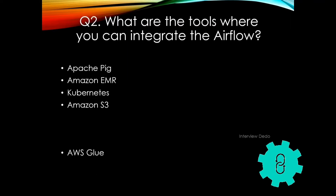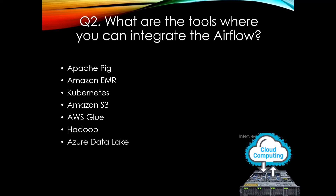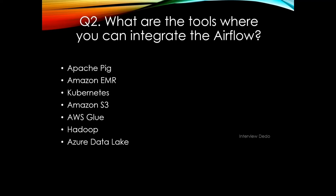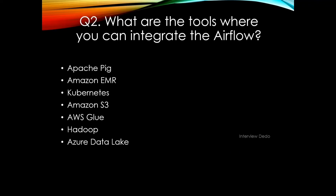There are many tools you can integrate with Airflow, like Apache Spark, which is a big data tool. EMR is also a big data tool used for cluster computing on top of AWS. Kubernetes is an orchestration tool where container management is possible, and you can integrate Airflow with it. You can integrate Airflow with S3, AWS Glue (an ETL tool), Hadoop MapReduce, and you can schedule jobs with those. Azure Data Factory and Azure Data Lake are also very helpful when working with Airflow. Microsoft and Amazon both provide managed Airflow solutions on top of Azure and AWS.